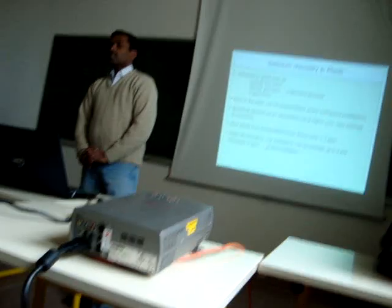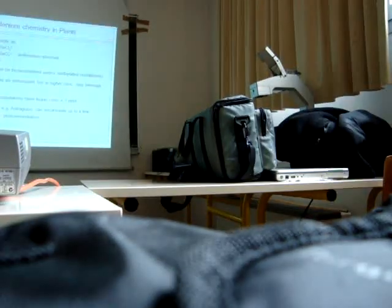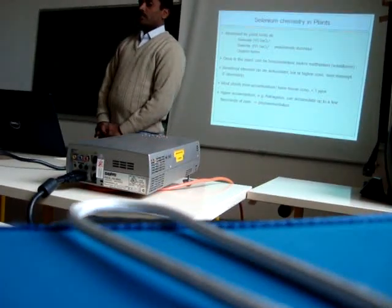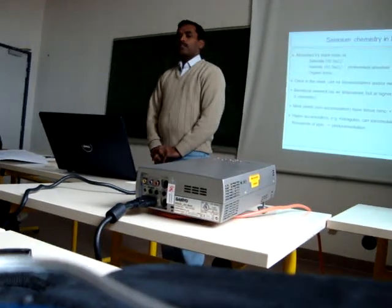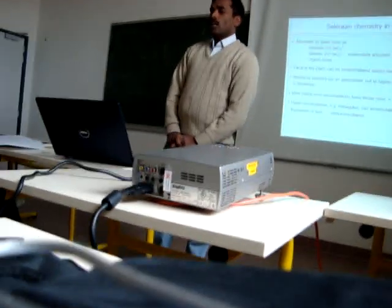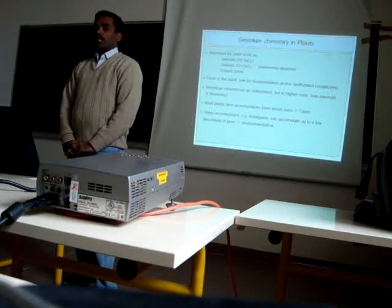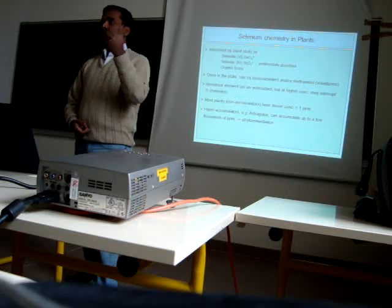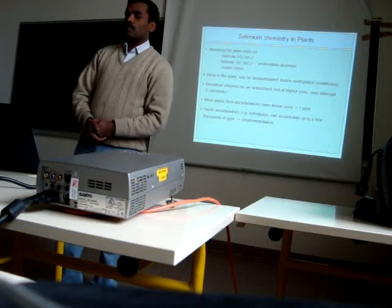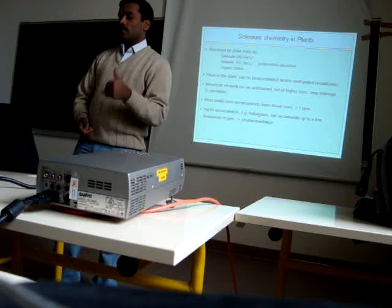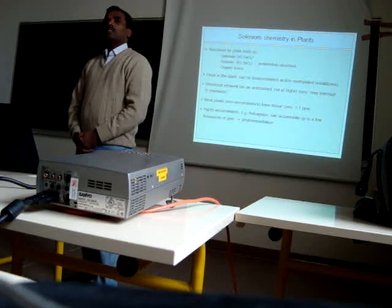Regarding selenium history in plants: plants absorb selenium in organic forms, including selenate and selenide. Selenate is preferentially absorbed compared to other selenide and organic forms of selenium. Once it enters the plant roots, it is bioassimilated to other plant parts. Selenium is a beneficial element with antitoxic properties, but higher concentrations may interrupt sulfur chemistry.